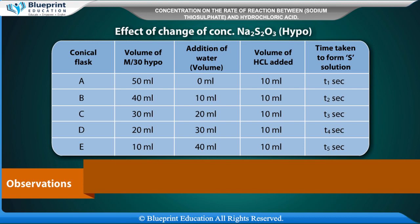Observation — Effect of change in concentration of Na2S2O3 (hypo): Flask A: 50 ml hypo, 0 ml water, 10 ml HCl, time = T1 seconds. Flask B: 40 ml hypo, 10 ml water, 10 ml HCl, time = T2 seconds. Flask C: 30 ml hypo, 20 ml water, 10 ml HCl, time = T3 seconds. Flask D: 20 ml hypo, 30 ml water, 10 ml HCl, time = T4 seconds. Flask E: 10 ml hypo, 40 ml water, 10 ml HCl, time = T5 seconds. Concentration of each flask is changed and hence the time differs.